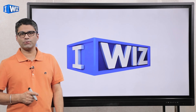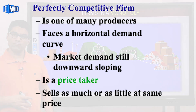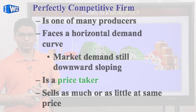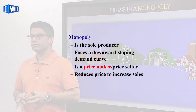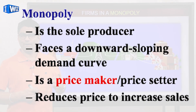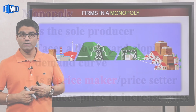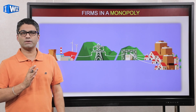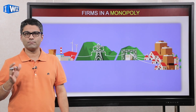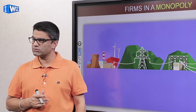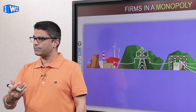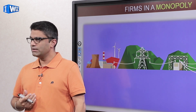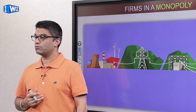Hey guys, hope you're doing well and are ready to continue with the topic on monopoly. Hopefully you remember from the last video the difference between perfect competition and a firm operating as a monopoly. As the graph goes across your screen, a competitive firm faces a horizontal demand curve — they can produce as much or as little as they want without changing the price. A monopolist, by contrast, must carefully choose how much to produce because price and quantity are determined from a downward-sloping demand curve.